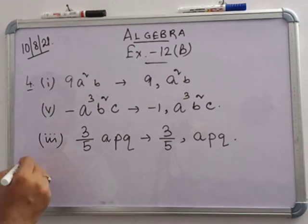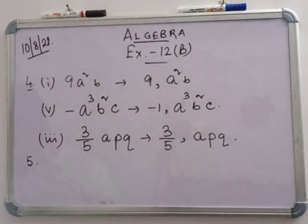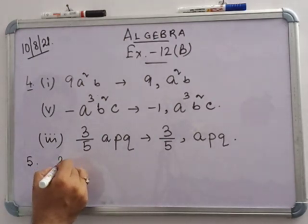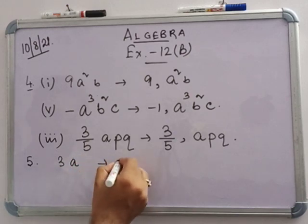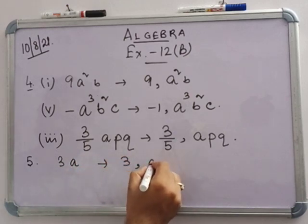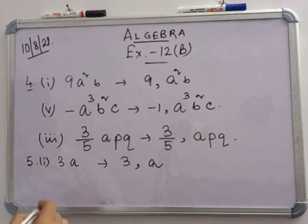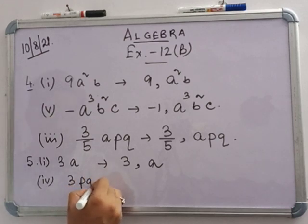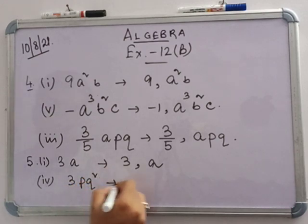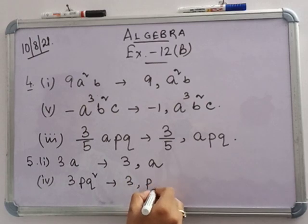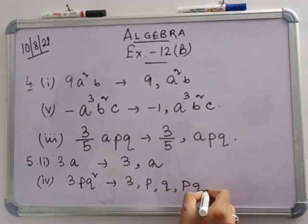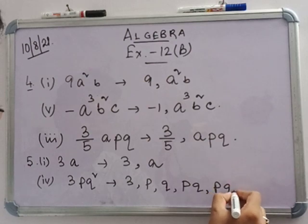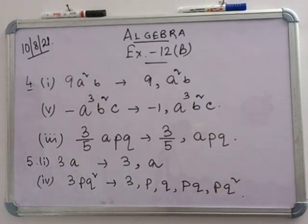In question 5, write the factors of the given monomials. For 3a, the factors are 3 and a. For minus x, the factors are minus 1, x, and minus x. For 3pq squared, the factors are 3, p, q, pq, pq squared.